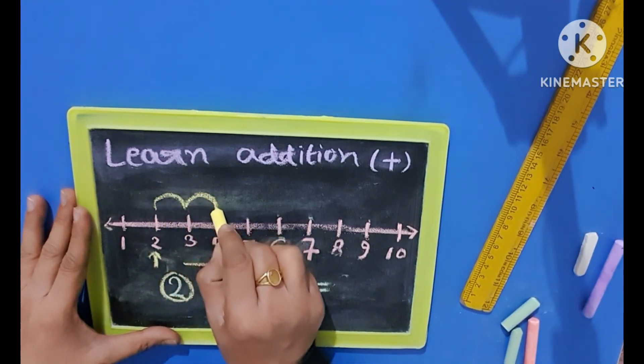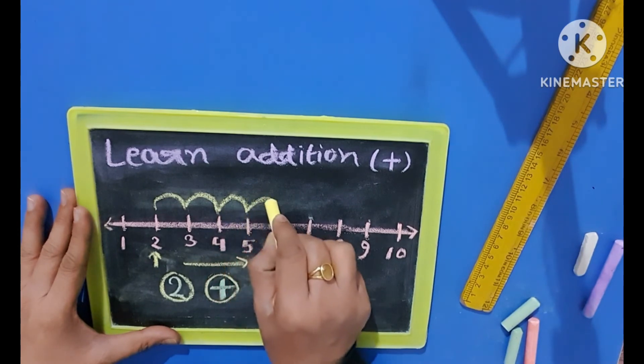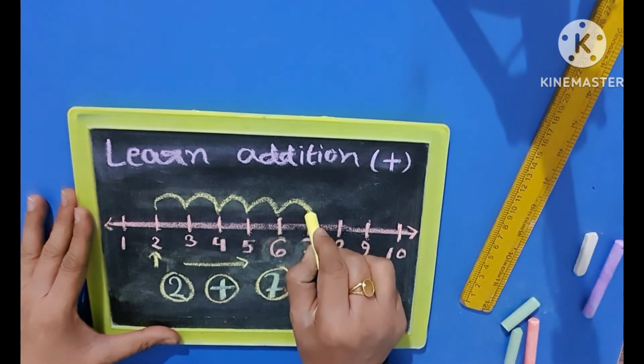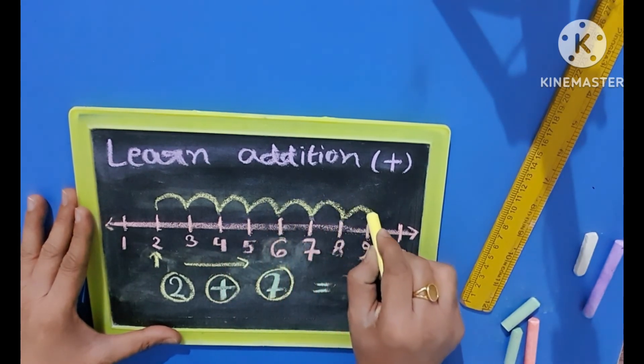So we will jump 7 times: 1, 2, 3, 4, 5, 6, and 7. Here is the answer.